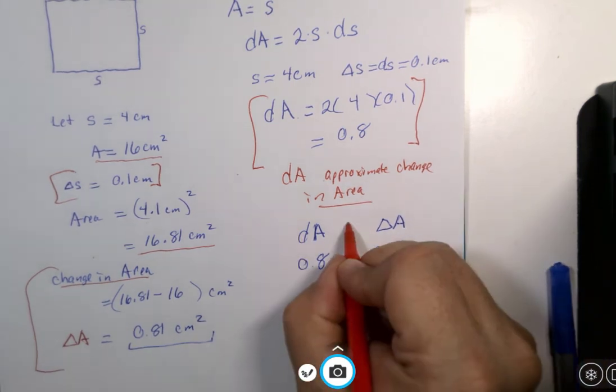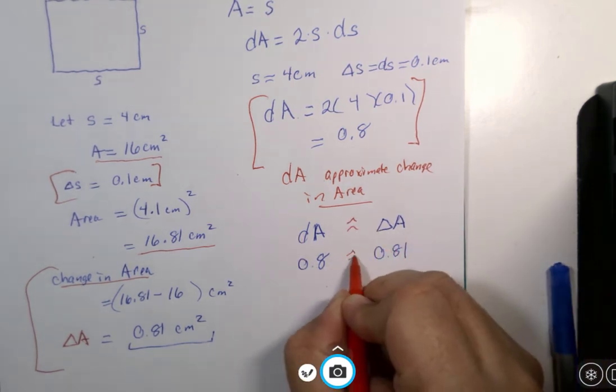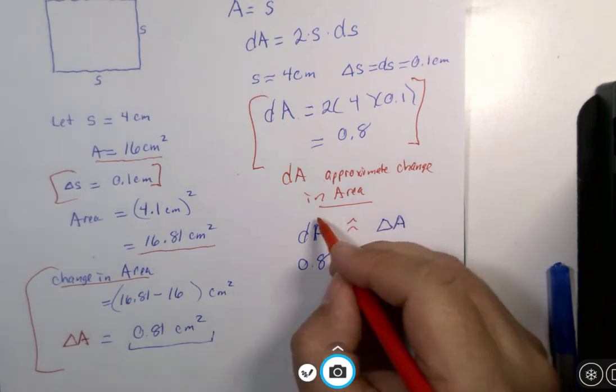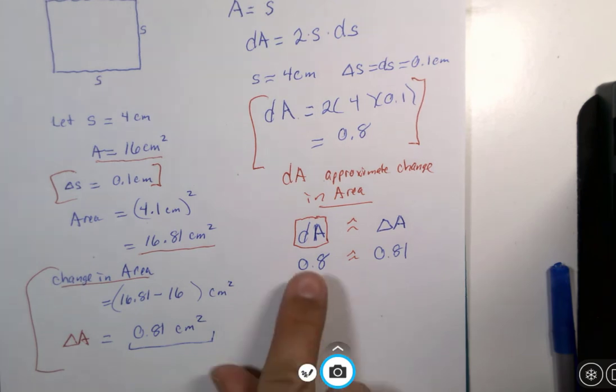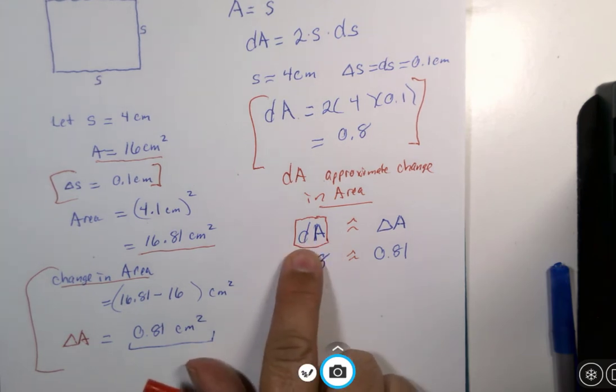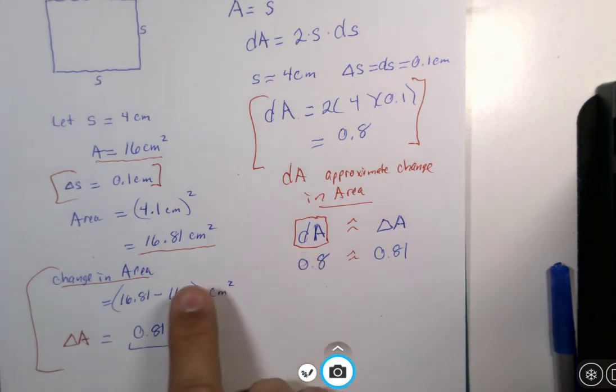And so, it turns out that for what we're going to use it for, this is a much easier calculation most of the time than this one is.